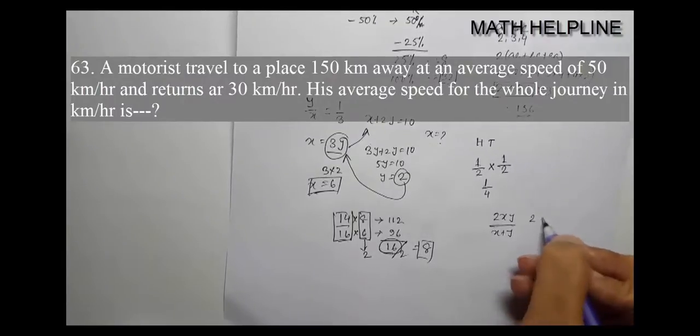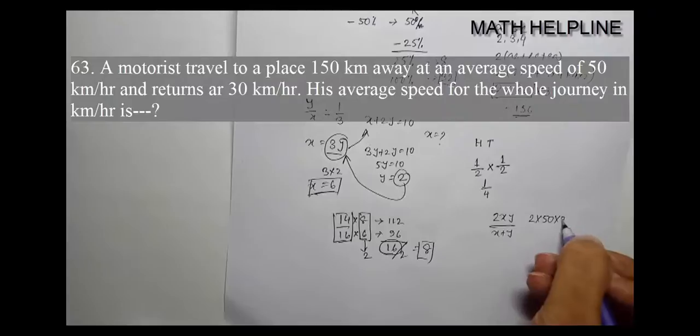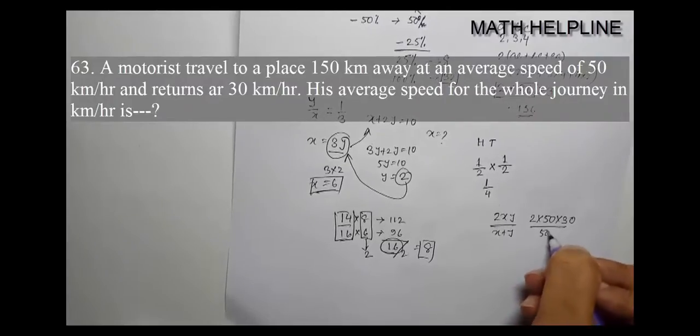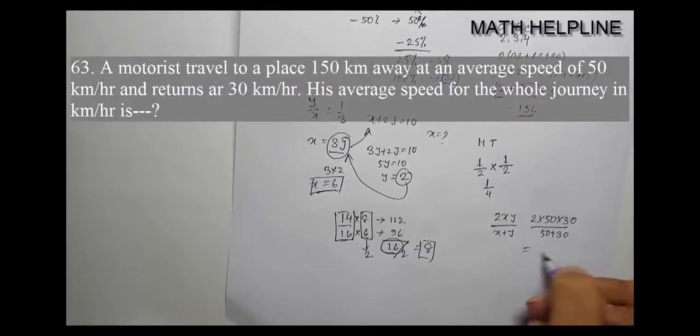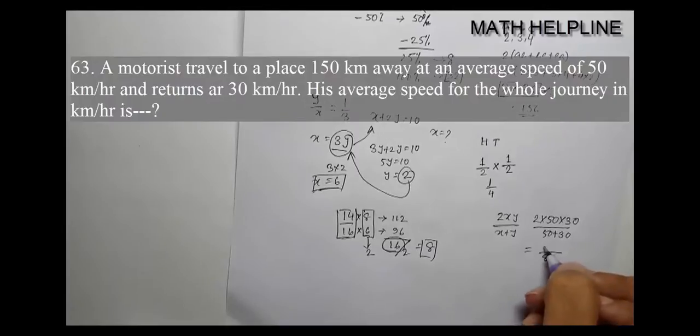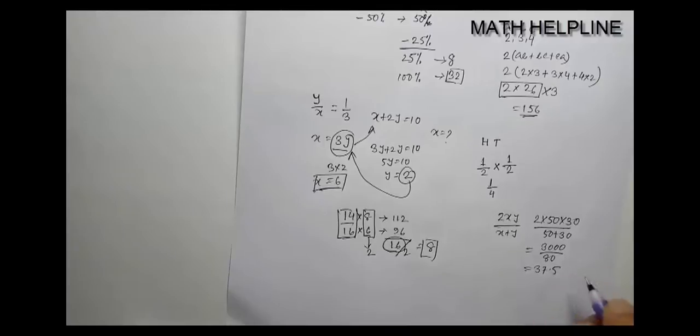So we calculate 2 times 50 times 30 divided by 50 plus 30, which is 3000 divided by 80. The answer is 37.5 km per hour.